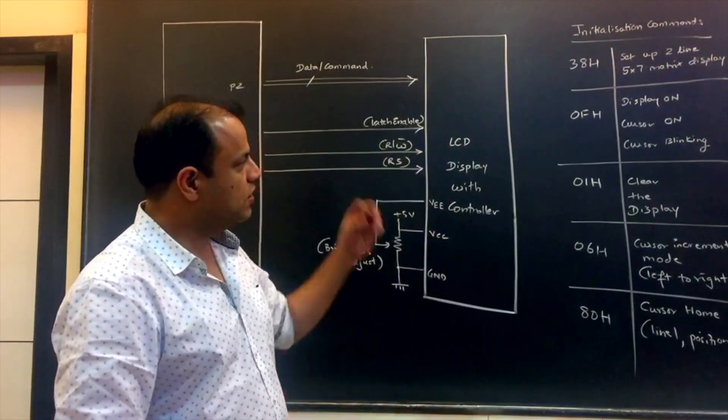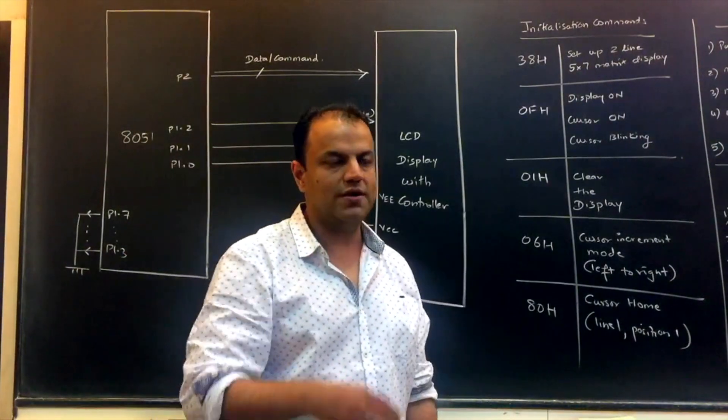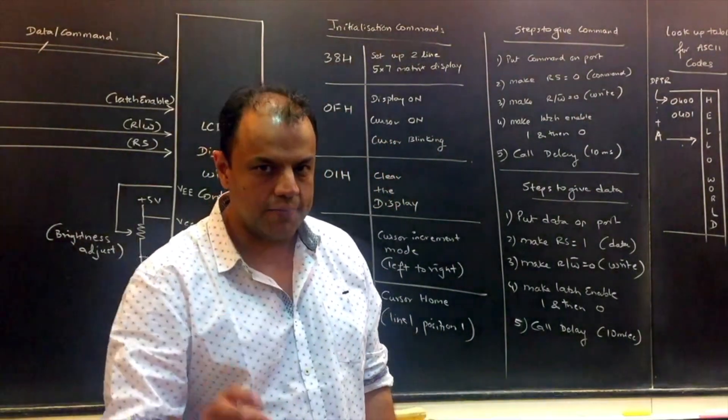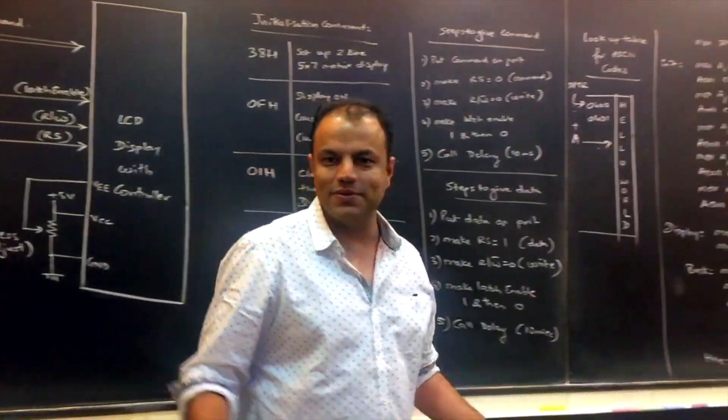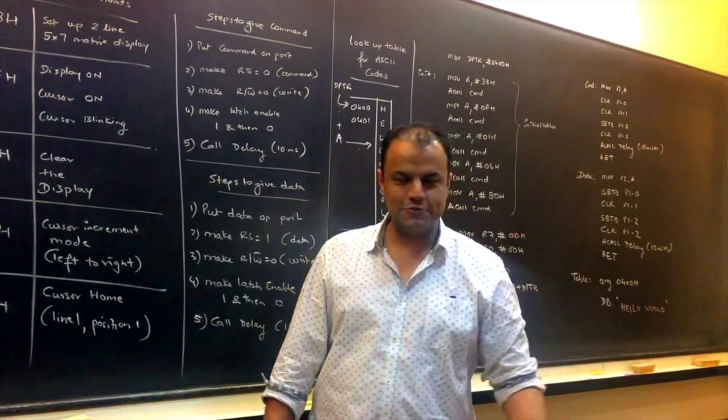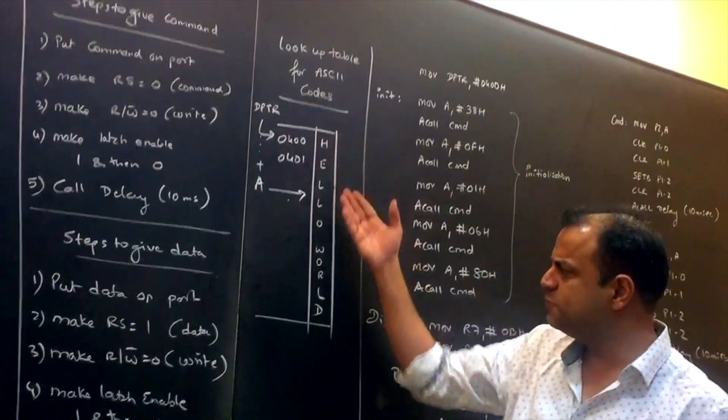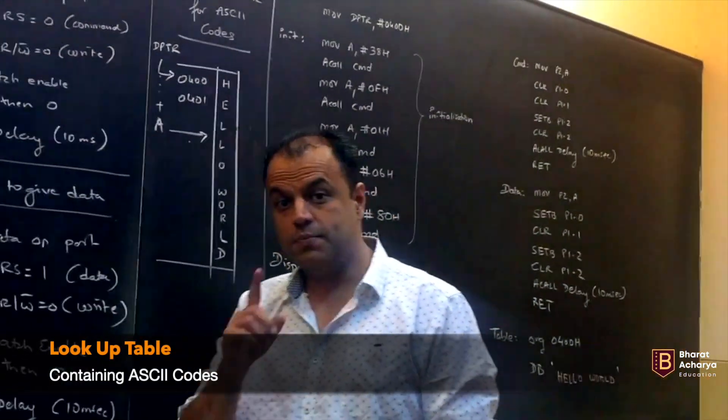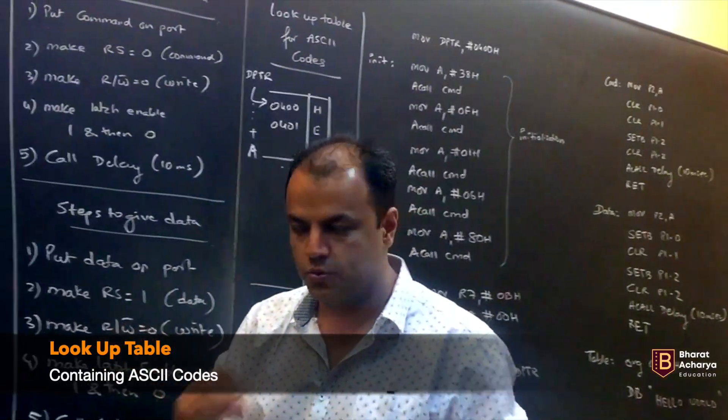So it's an LCD display with controller. You give this controller various commands which I am going to teach you. By those commands you decide what kind of display you want. And then you give the data that you want to display. Suppose you want to display A as an example. You don't send A, you send the ASCII value of A.